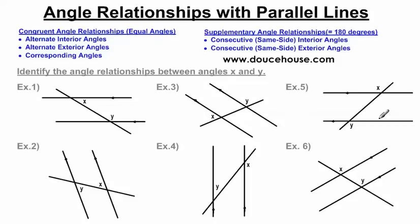I've got six examples here — one example of each angle relationship from parts one and two. I actually have one answer choice which is 'none,' because there's going to be one case with no angle relationship. I'll show you what I mean when I get there.